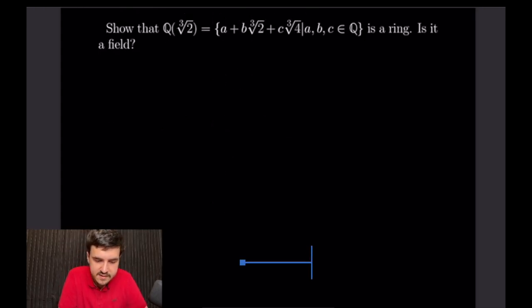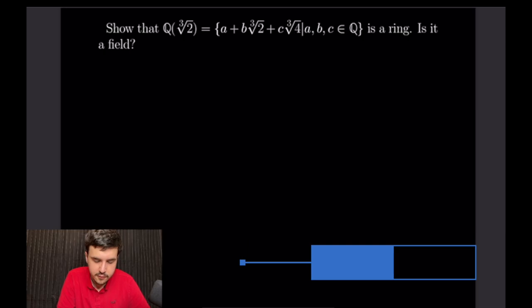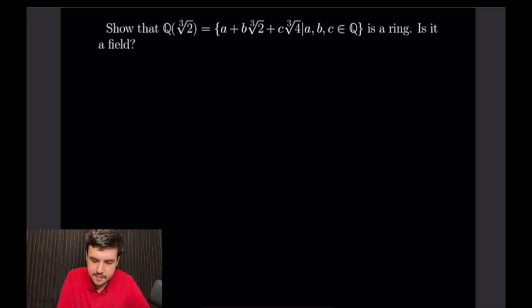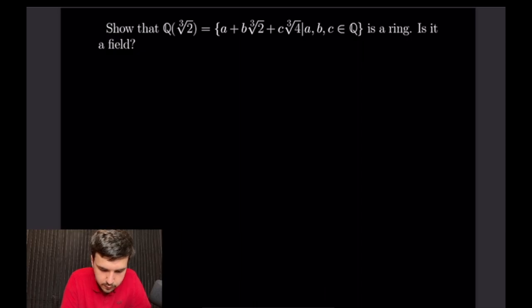Example 3: We want to show Q(∛2) = {a + b∛2 + c∛4 | a, b, c ∈ ℚ} is a ring and determine if it is a field. This is similar to Example 1. We first consider this set with addition and verify it forms an abelian group.